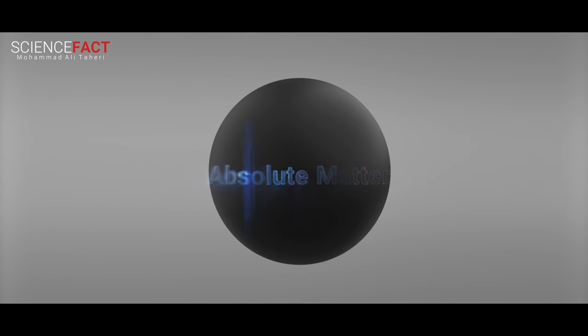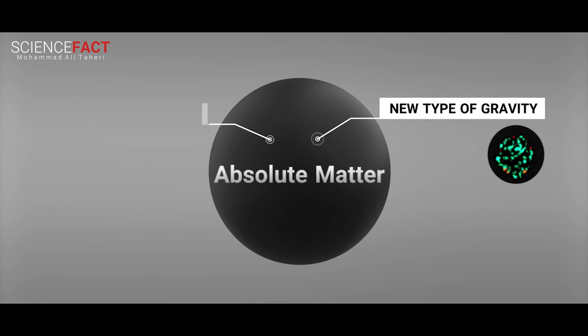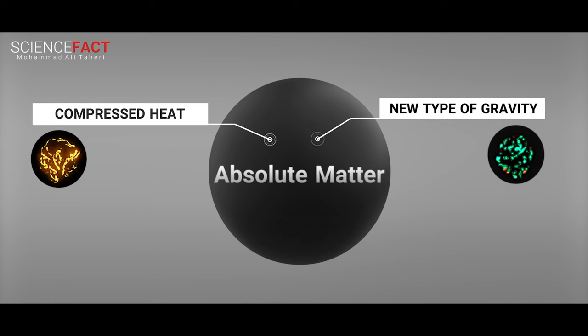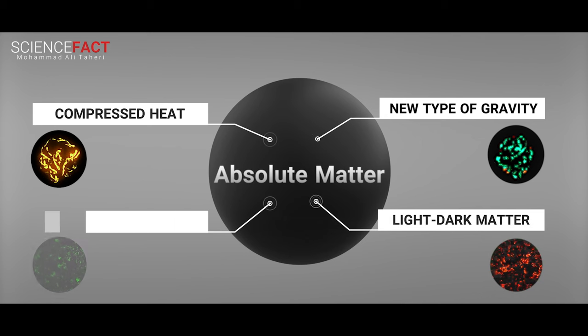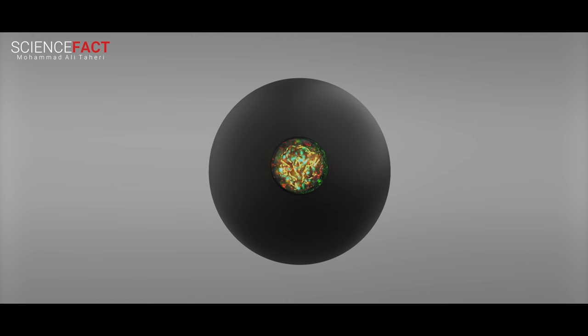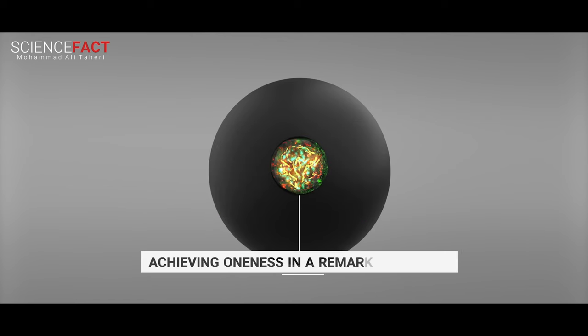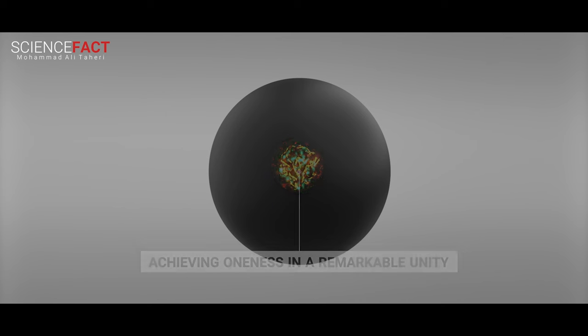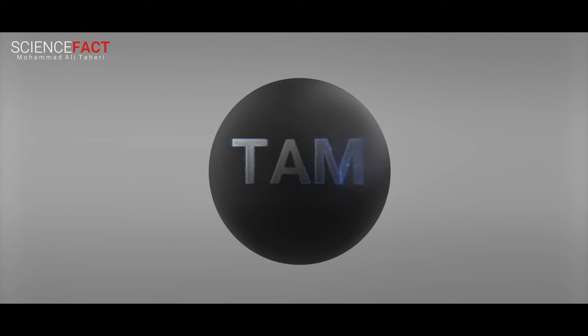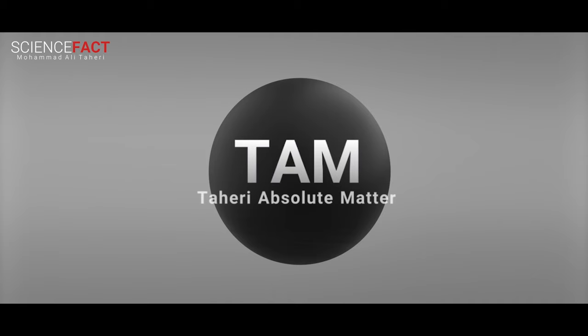Inside the cosmic black hole, an absolute matter is formed out of the unity of this new type of gravity and compressed heat of a new nature, light-dark matter, and dark-dark matter. Here, everything becomes indistinguishable, achieving oneness in a remarkable unity. We call this TAM, or Taheri Absolute Matter.